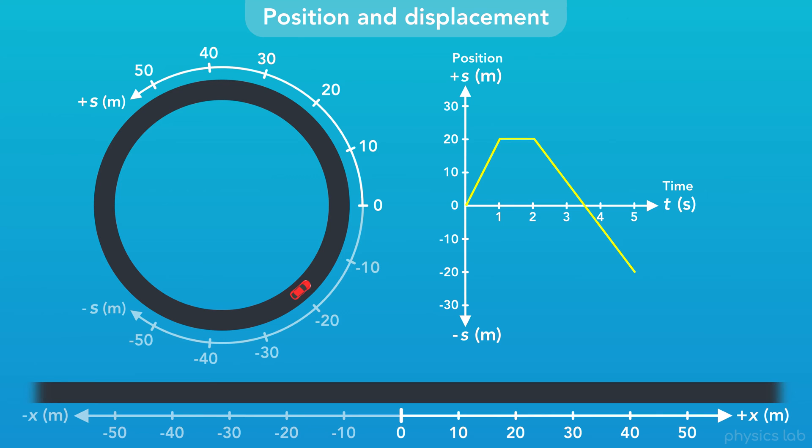The object can move as far as it wants in the positive or negative direction, and we measure its position relative to the initial zero point that we established. So that's how we describe position and displacement for circular motion.